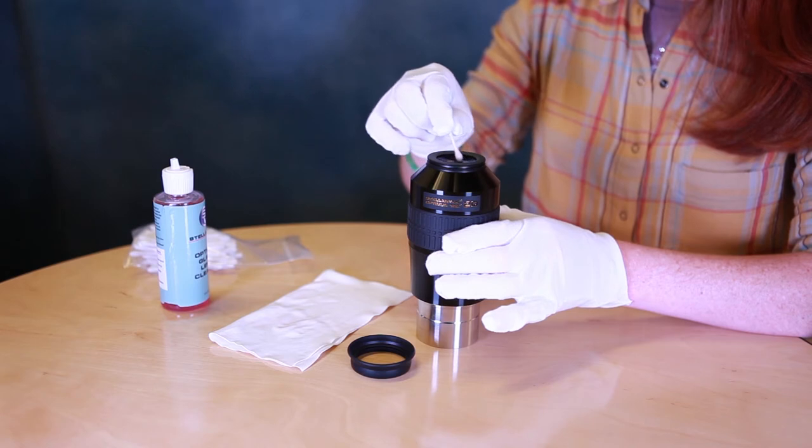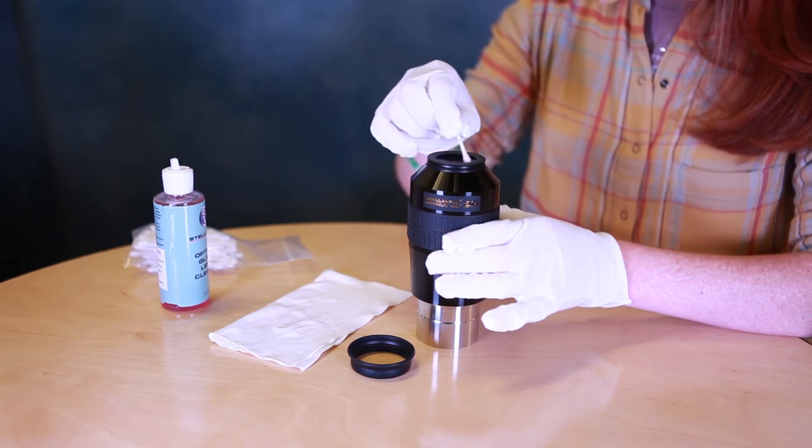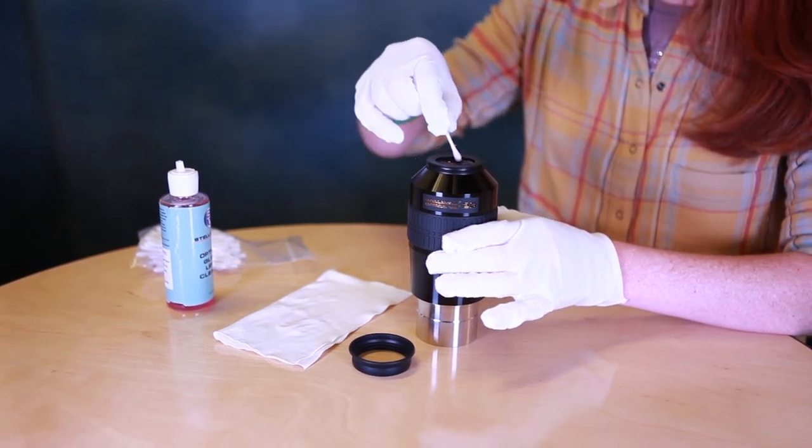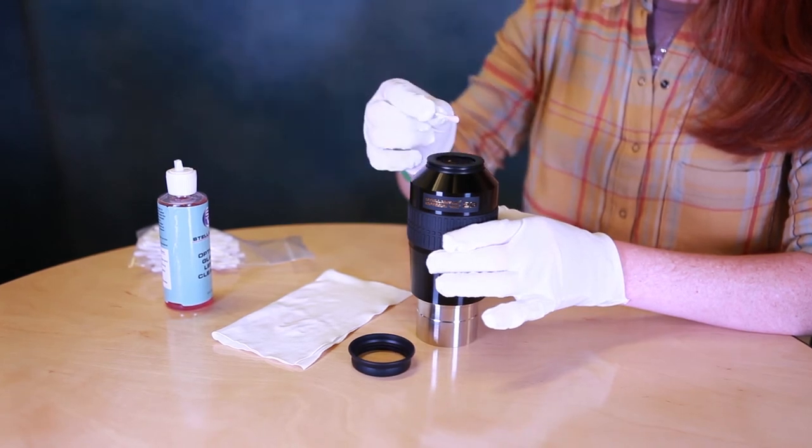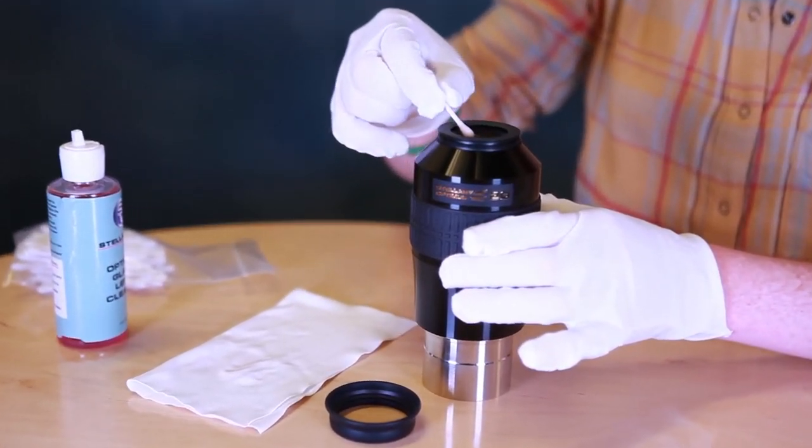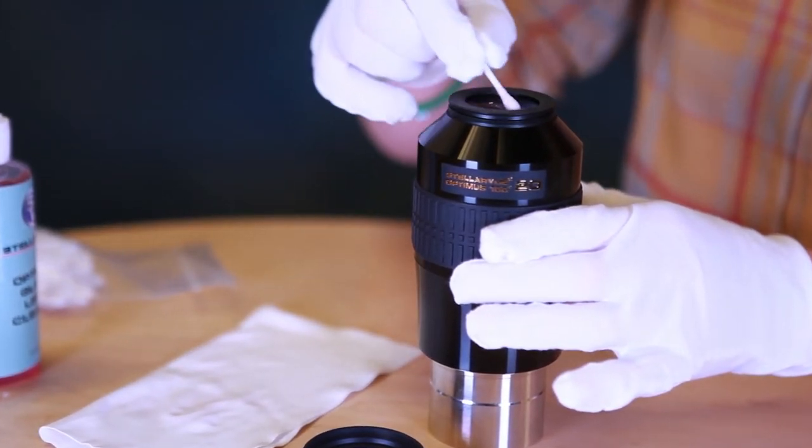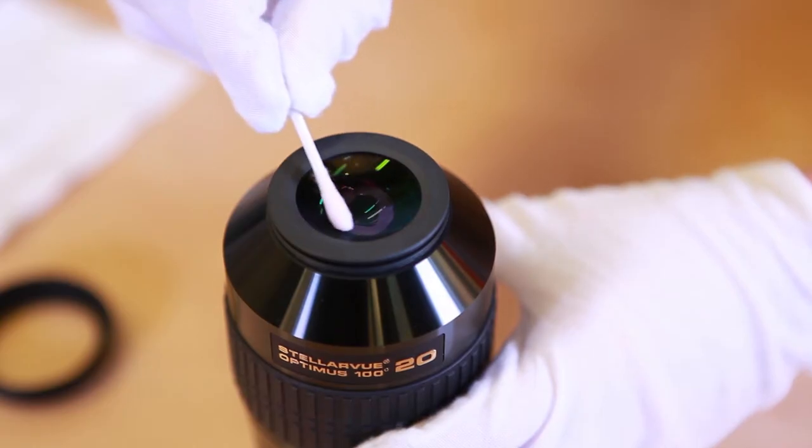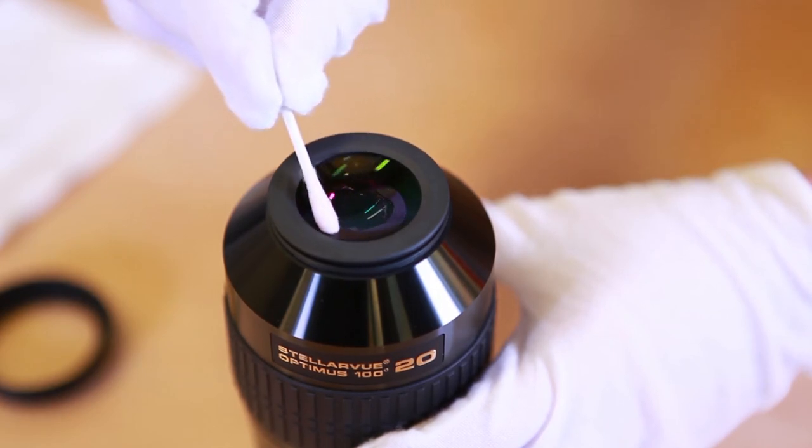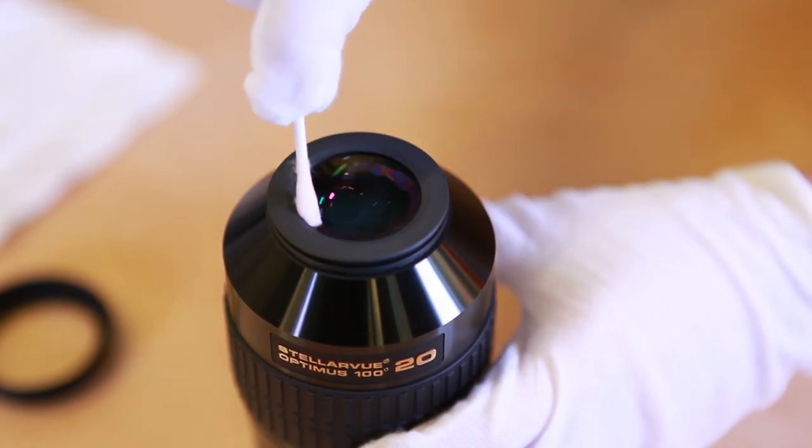When you clean the lens surface, start in the center. Go in small circles and work your way slowly out towards the edge. Do this three times. Each time, you rotate the cotton swab one third turn before doing it again.